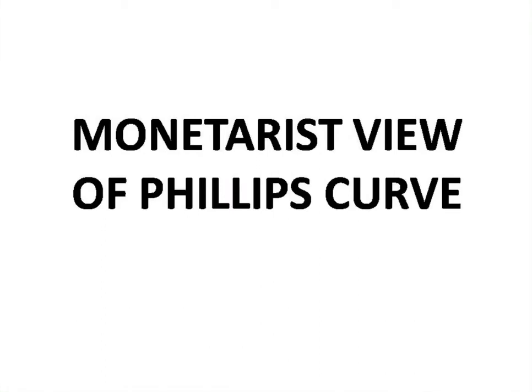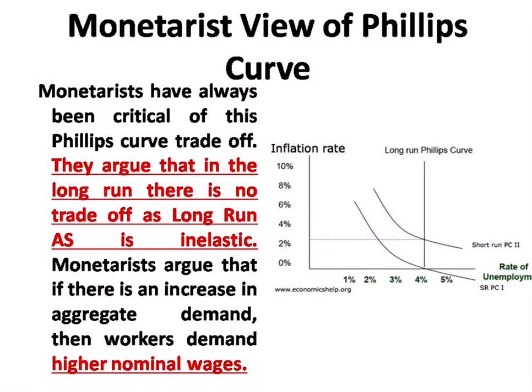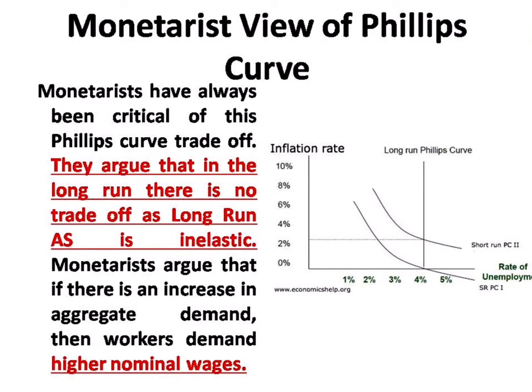Hello everyone, welcome to Economics by Vishwa and Arpita. This is our topic: the Monetarist view of the Phillips Curve. The Monetarist view was always critical of the Phillips Curve trade-off, arguing that there is no trade-off in the long run, as the long-run aggregate supply is always inelastic.